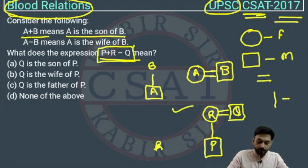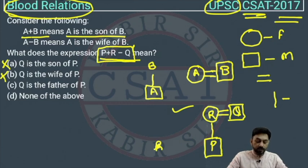Q is the son of P. This is wrong, first option. Now let us check option B. Q is the wife of P? No, this is wrong. Now option C: Q is the father of P. This is right because Q is male and Q is the father of P.